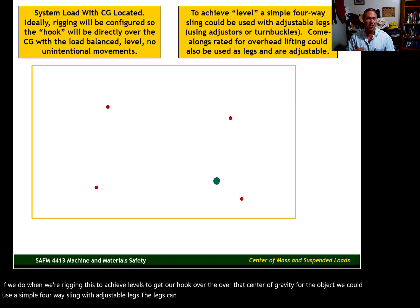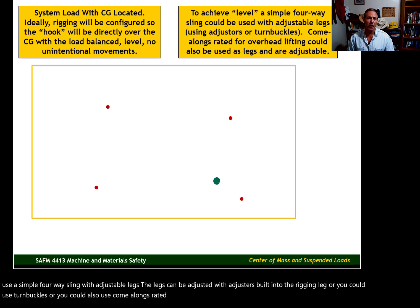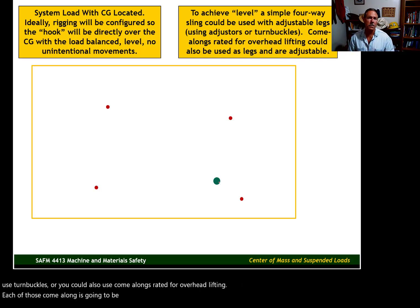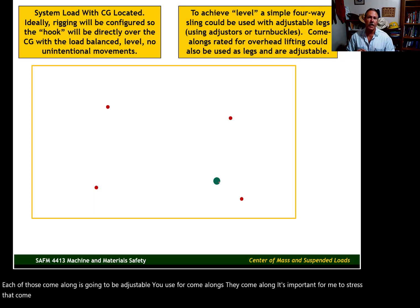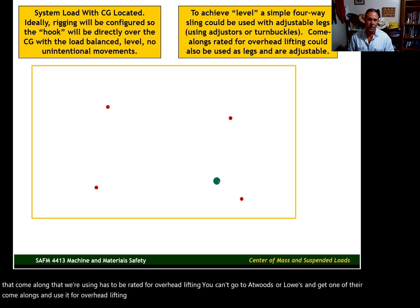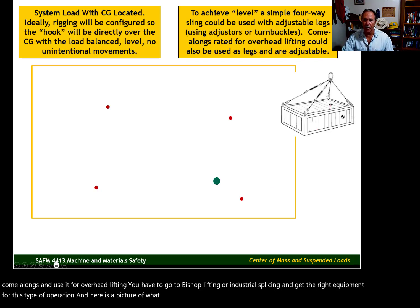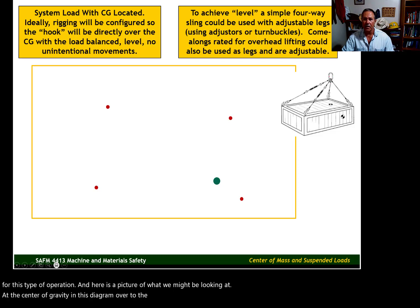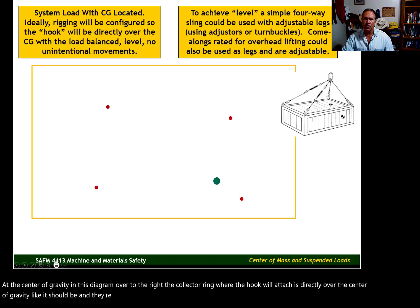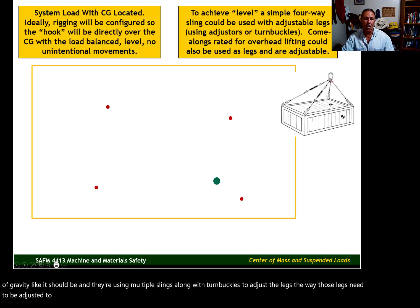When rigging to achieve level lift with the hook over the center of gravity, you could use a simple four-way sling with adjustable legs. The legs can be adjusted with adjusters built into the rigging leg, or you could use turnbuckles, or come-alongs rated for overhead lifting. It's important to stress: the come-along must be rated for overhead lifting. You can't use a come-along from a general hardware store — you have to get the right equipment from a proper lifting supply source. In the diagram, the collector ring where the hook attaches is directly over the center of gravity, using multiple slings with turnbuckles to adjust the legs appropriately.